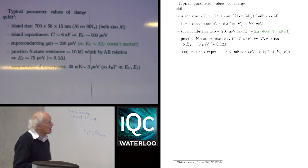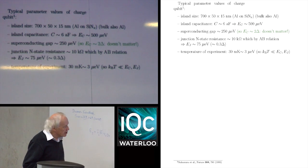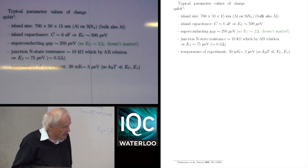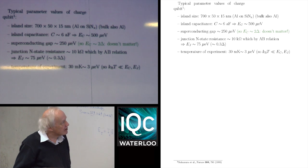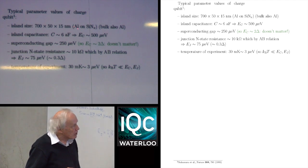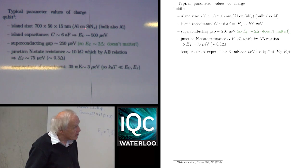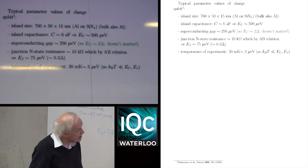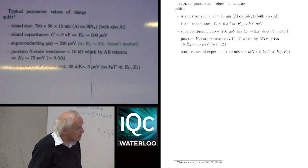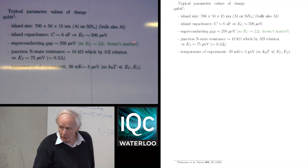Some typical parameter values for a charge qubit come from the second Nakamura paper, which demonstrated things a little more spectacularly. Their actual superconducting sample — both for the bulk and the grain — was aluminum on a base of silicon nitride. The island capacitance is extremely small: about six attofarads, which gives you a capacitance energy of something like 500 microvolts.